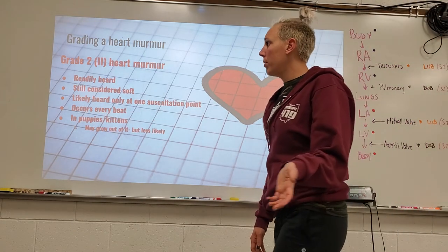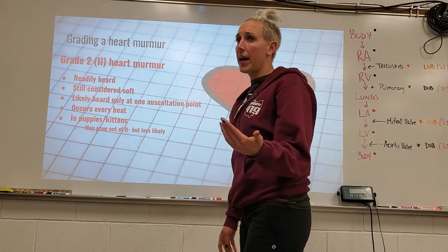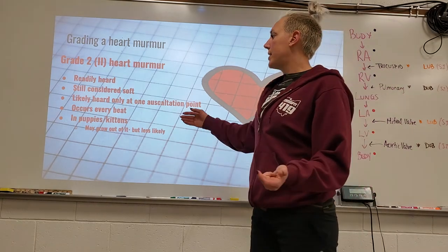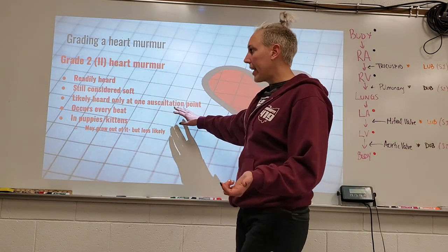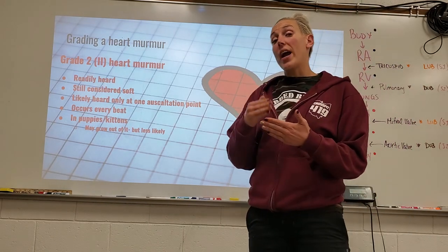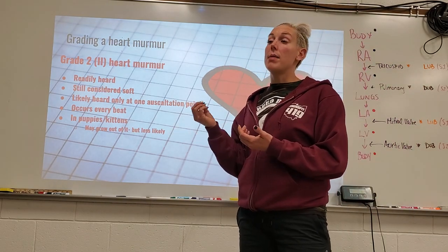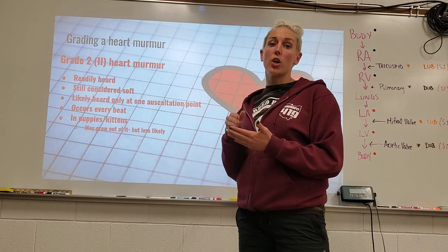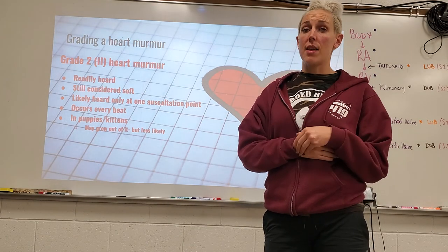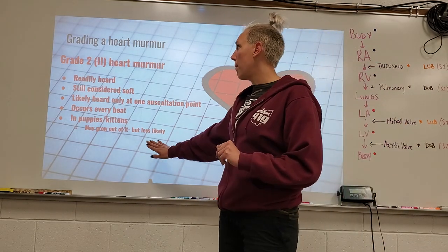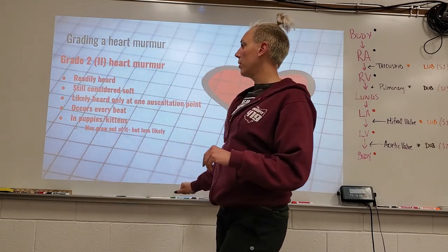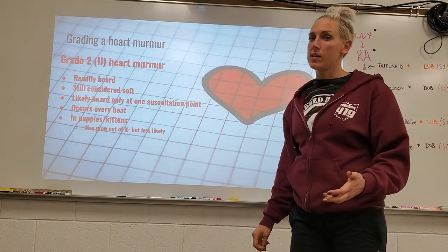A grade two heart murmur is readily heard in a normal environment, though still considered soft. It occurs every beat and is likely heard at only one auscultation point. In puppies or kittens, they may still grow out of it. In older dogs presenting with a grade two for the first time, it may indicate early signs of heart disease.